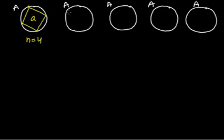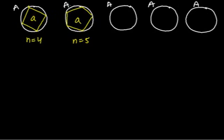That's why I am making a pentagon here — 1, 2, 3, 4, and 5. It is a pentagon. Now see what is the difference between this area. The difference between the area of the circle and the area of the quadrilateral is more than the difference between the circle and the area of this pentagon.